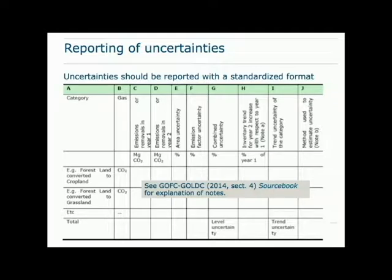There is a standardized format that the uncertainty should be reported in. For a given land cover conversion, you have an emission or removal value for two different years, then the uncertainty in the area and emission factor, and then combined uncertainty. This is followed by the inventory trend and trend uncertainty, done for each land cover category, with a total given at the bottom.